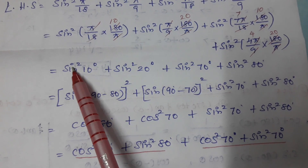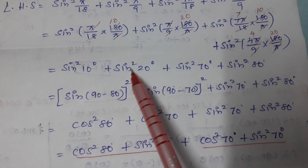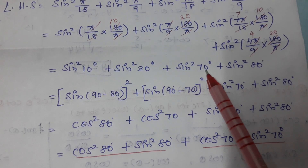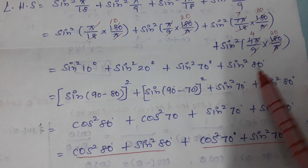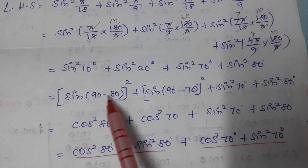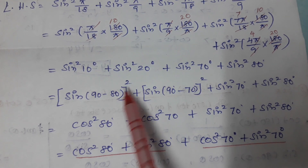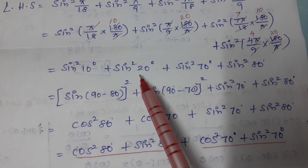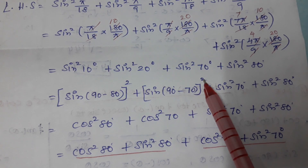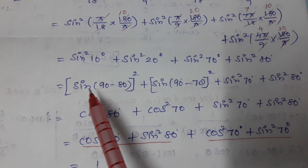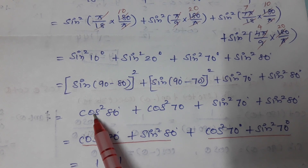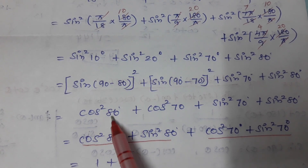Now sin10° = sin(90°−80°) = cos80°, and sin20° = sin(90°−70°) = cos70°. Using sin(90°−θ) = cosθ, we replace to get cos²80° + cos²70° + sin²70° + sin²80°.